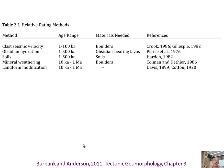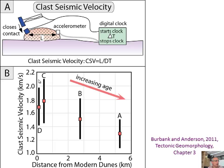Now for a few relative dating methods to show what we mean. This table is from Burbank and Anderson. The first is clast seismic velocity — if you have a boulder sitting on the surface, the older it gets, the lower the seismic velocity in the rock because it's more weathered. This example shows increasing age associated with distance from modern dunes in a series of clasts.